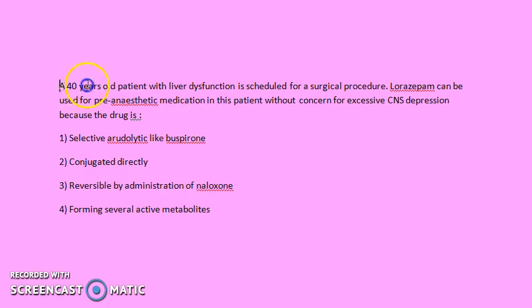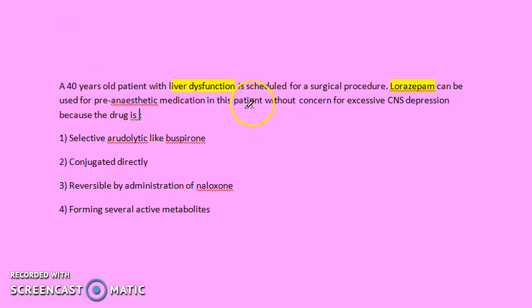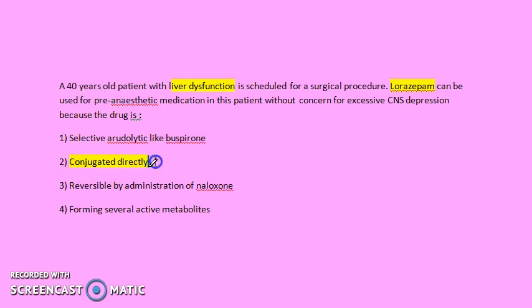Second question: a 40-year-old patient with liver dysfunction is scheduled for a surgical procedure. Lorazepam can still be used as a pre-anesthetic medication because, even though the liver is not working and cannot metabolize drugs normally, lorazepam can be conjugated directly — it does not require hepatic metabolism.